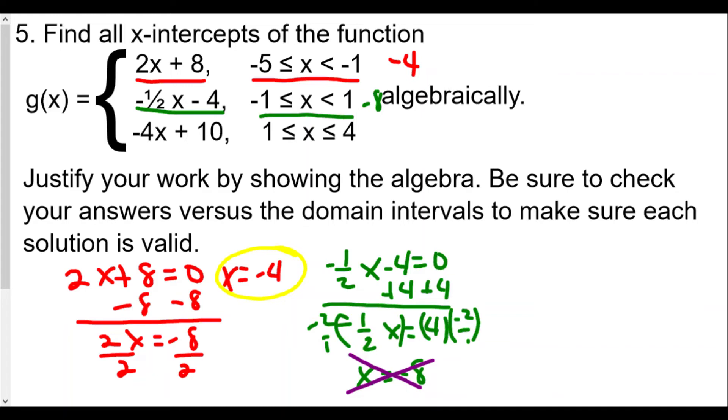Now let's go on to our last function here. We have -4x + 10, and we set that equal to zero. We subtract 10 from both sides.